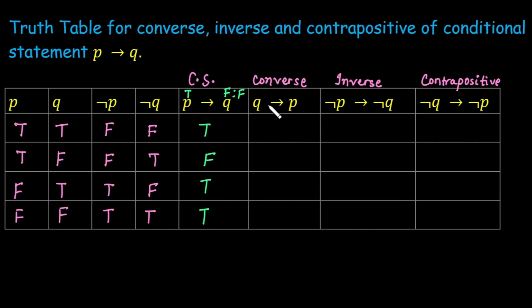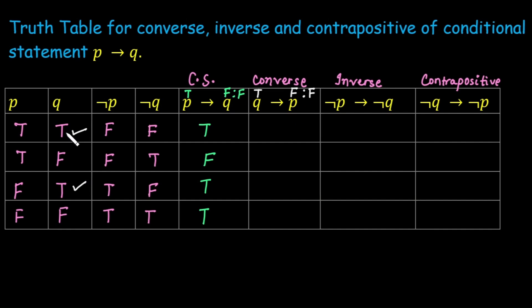Applying the same concept to the converse Q implies P: a conditional statement is false only when the hypothesis is true and the conclusion is false. Here the hypothesis is Q and the conclusion is P. Q is true in the first and third cases. Corresponding to those, P is false only in the third case. So only in the third case is the converse false; otherwise it is true.